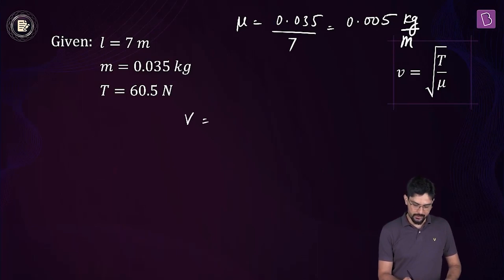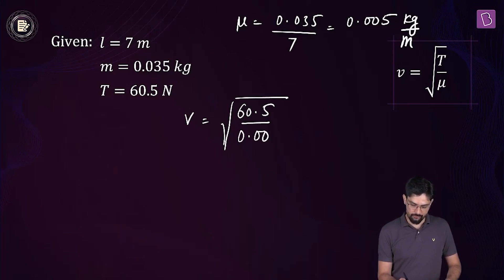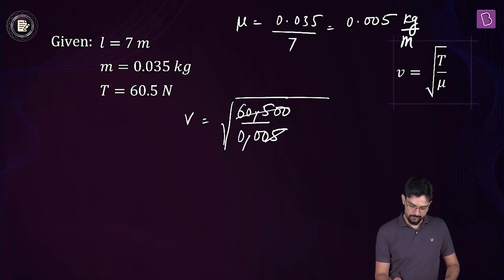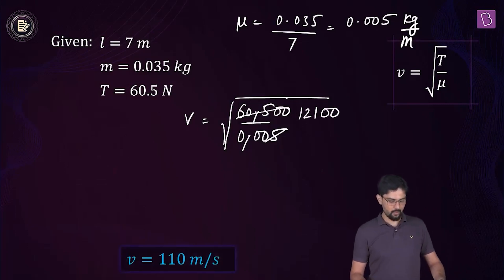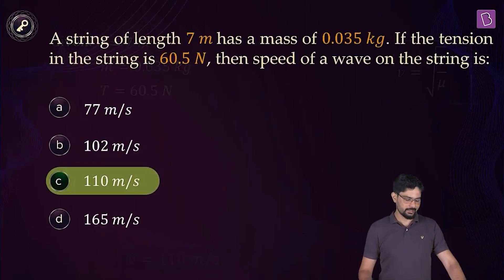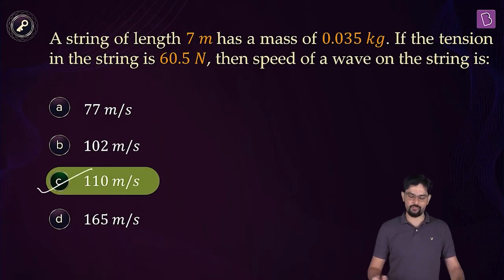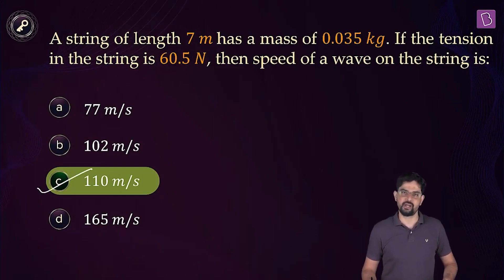To find out v, we put the values: v equals square root of 60.5 divided by 0.005. This gives 12100 under the root, which comes out to be 110 meters per second. So option C is the right value of the wave speed on this string.